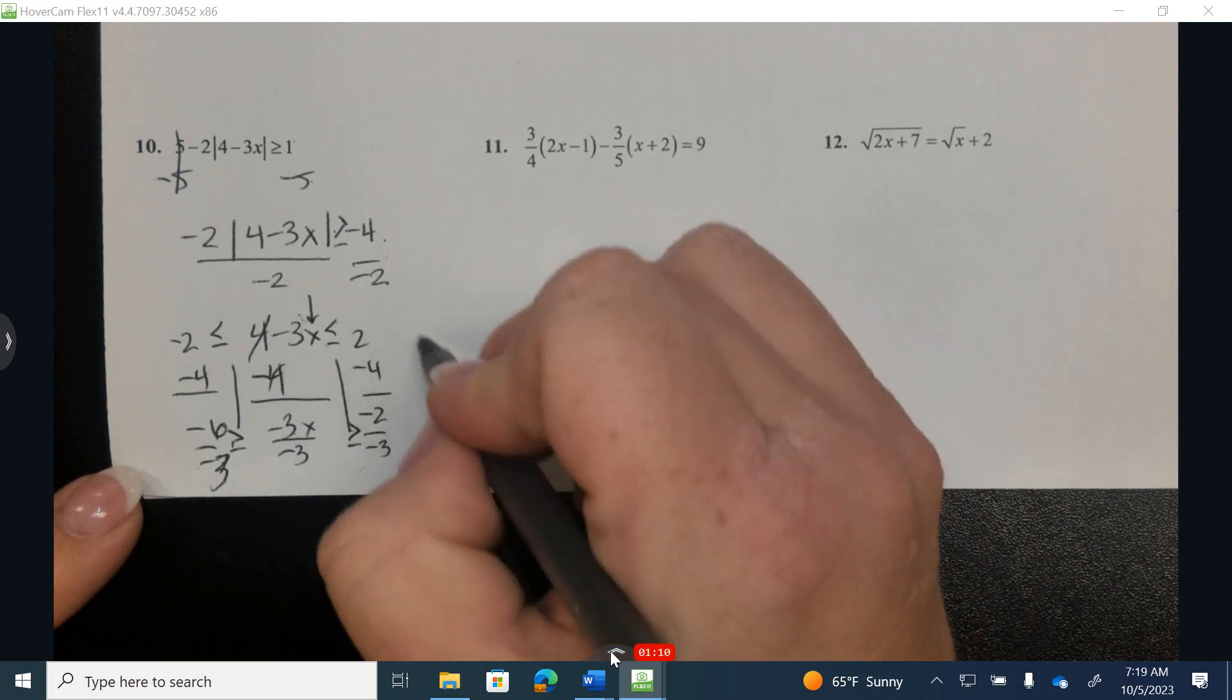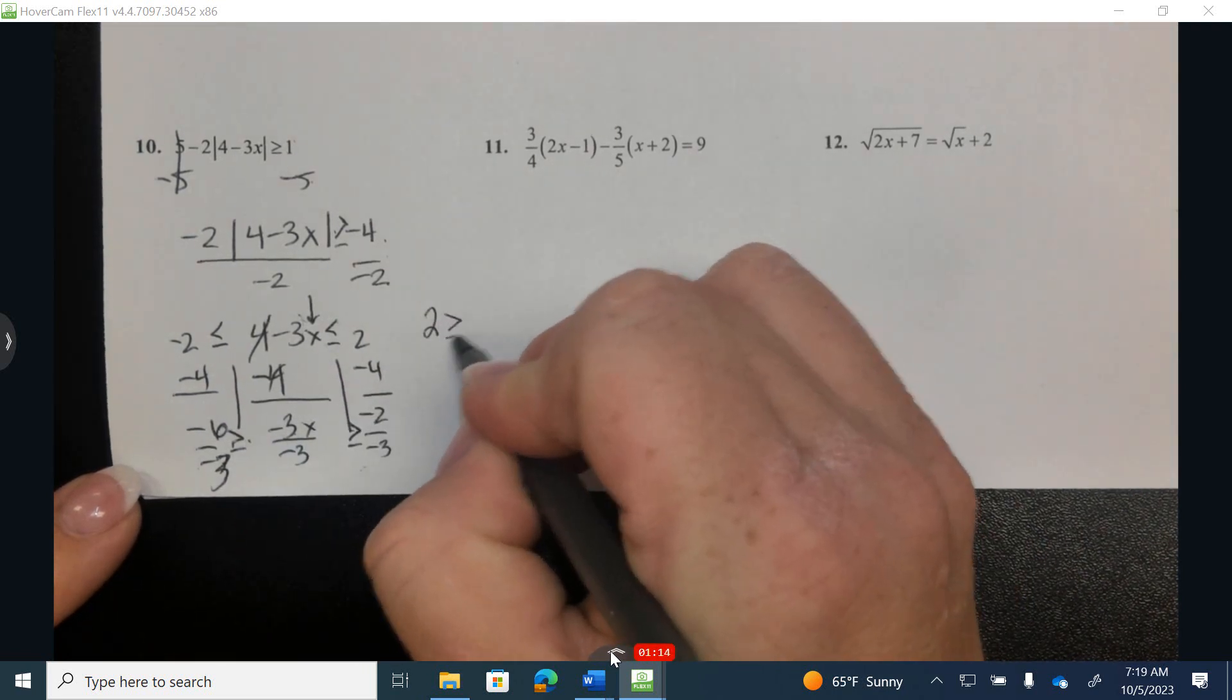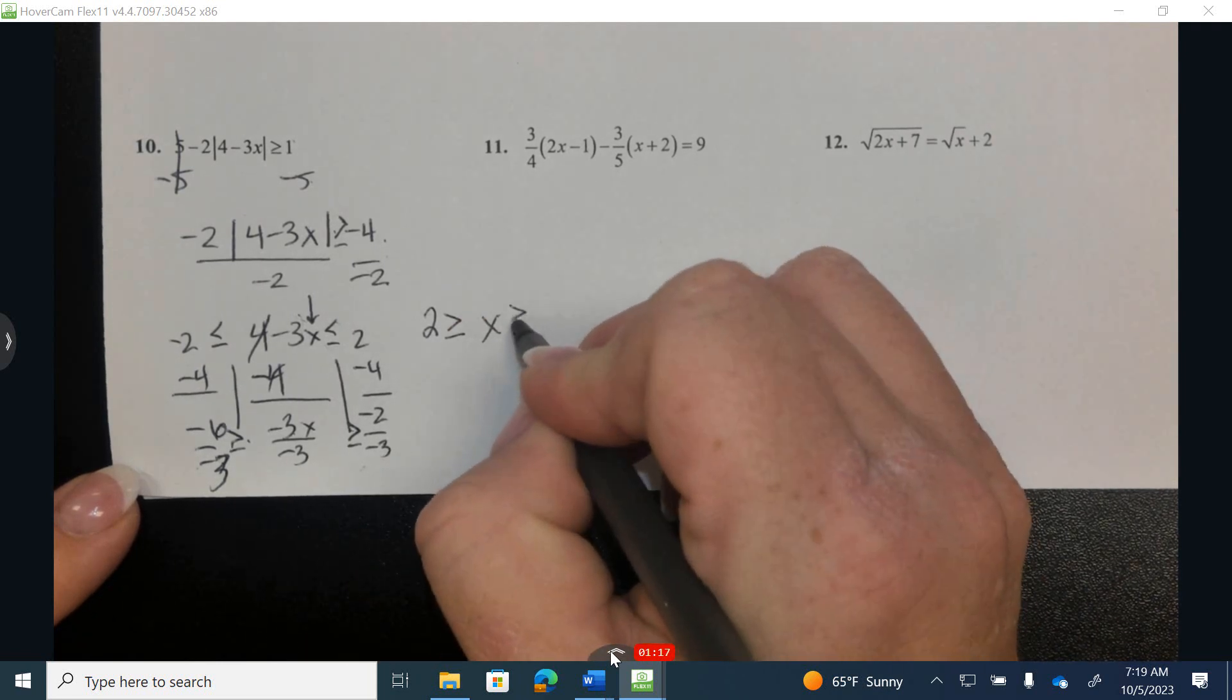Negative 6 divided by negative 3 is 2. Here is our symbol. Negative divided by negative is a positive.